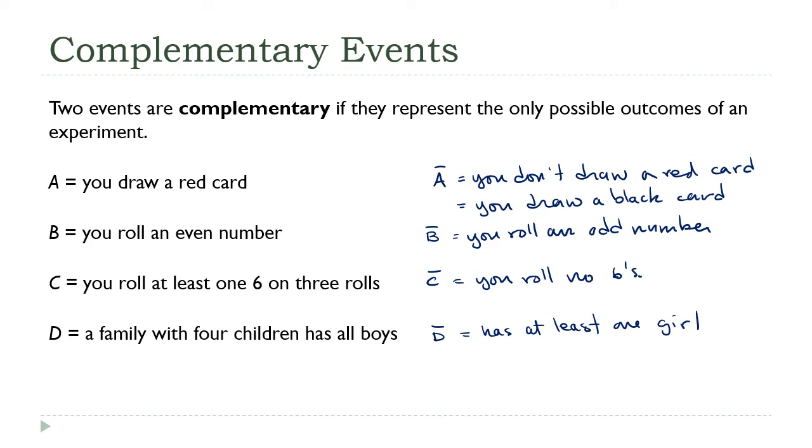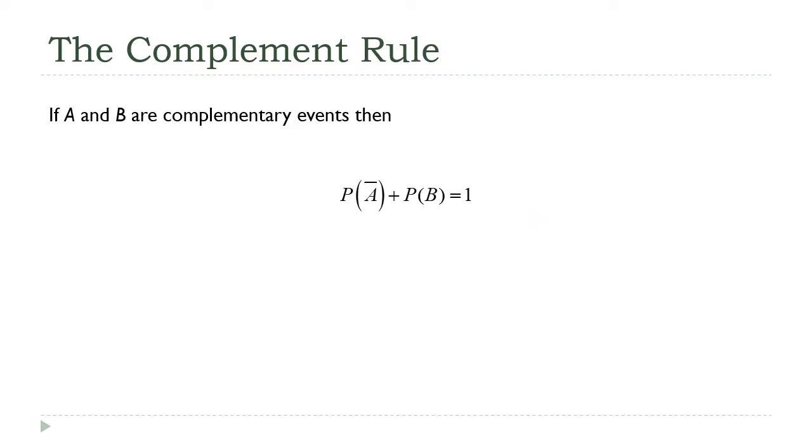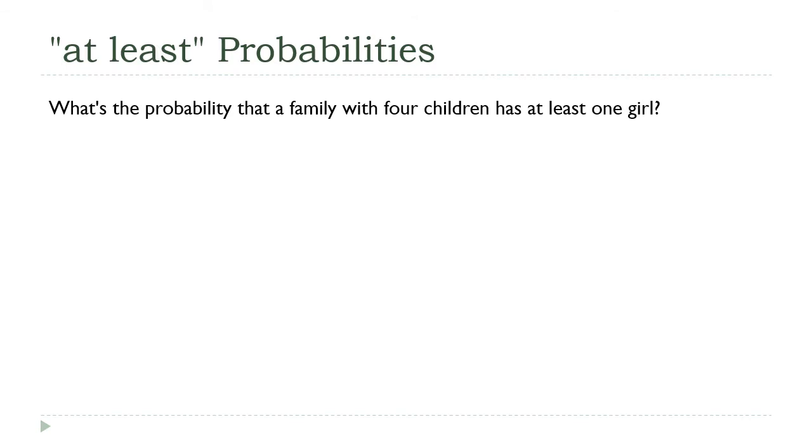What does this mean in terms of probabilities? It's called the complement rule. It says if A and B are complementary events, then the probability of A plus the probability of B is equal to one. If you think of this as percentages, that one is 100%. An event happens or an event doesn't happen, that's 100% of the possible results.